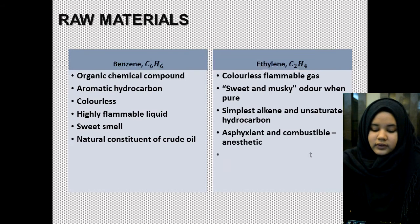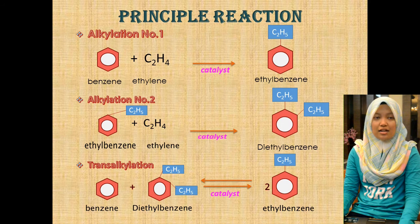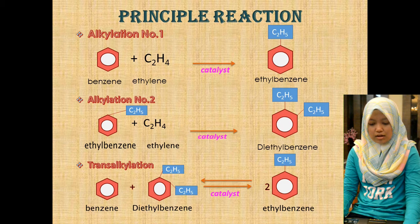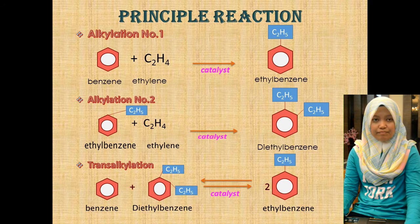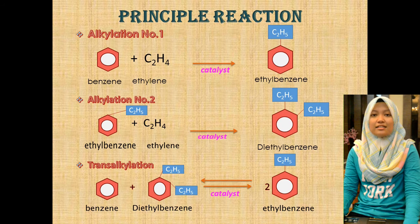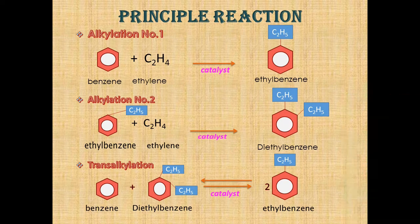There are three principal reactions in this process: alkylation no. 1, alkylation no. 2, and transalkylation. In alkylation no. 1, benzene reacts with ethylene in the presence of a zeolite catalyst to produce ethyl benzene. In alkylation no. 2, ethyl benzene reacts with ethylene to produce diethyl benzene. In transalkylation, diethyl benzene reacts with benzene to produce two moles of ethyl benzene.